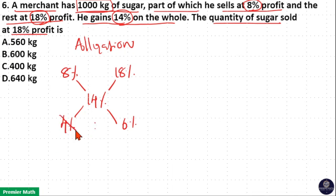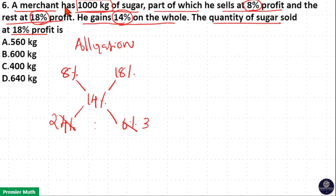2 goes 2 times into 4, and 2 goes 3 times into 6. So the ratio of sugar sold at 8% to sugar sold at 18% is 2 to 3 respectively.